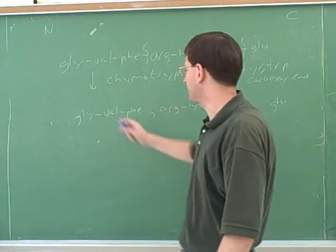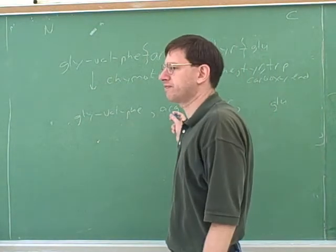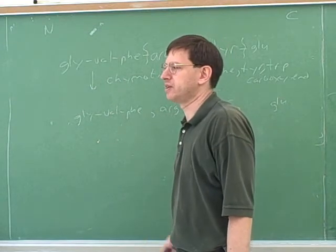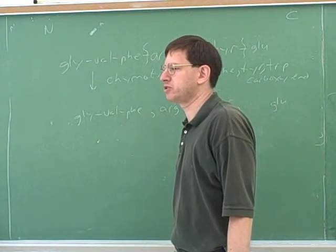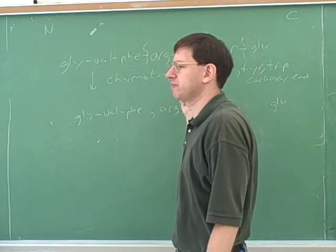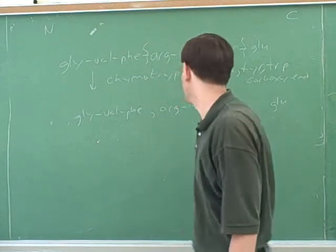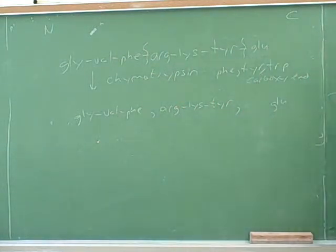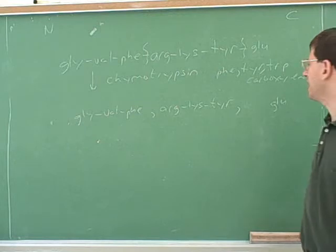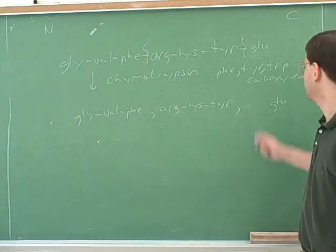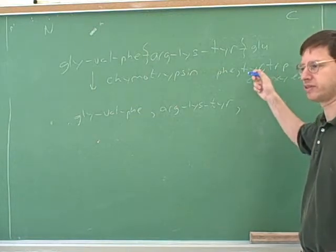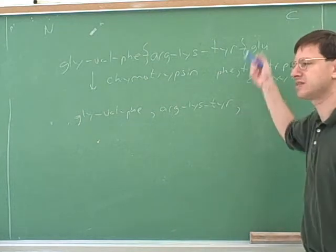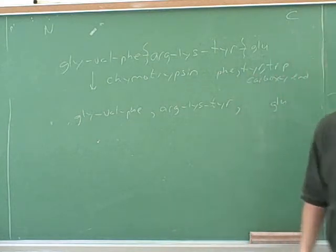Now that we've got things cleaved into smaller fragments, we could do an Edman degradation. If the original peptide was too big, we use chymotrypsin to cleave it into fragments and then do the Edman degradation. There are also other enzymes that cleave on the N-terminus end — you always have to look that up to see whether it's cleaving on the N-terminus or C-terminus.